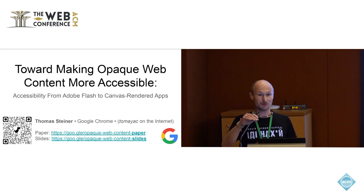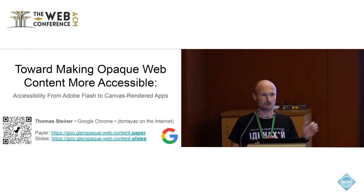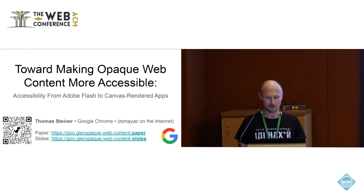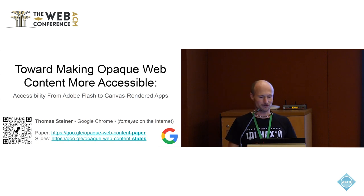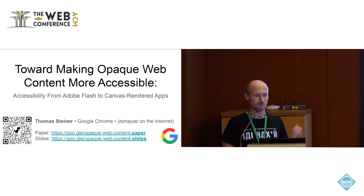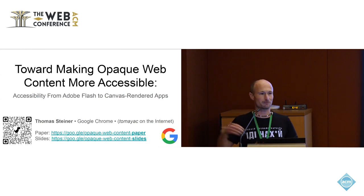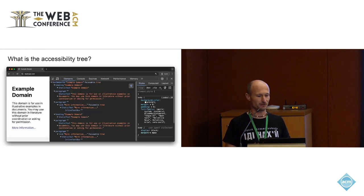My name is Thomas Steiner. You can find me as Tomajak on the internet, Mustard on Twitter — just search for Tomajak and you'll find your social network of choice. I'm from the Google Chrome team, and today I want to talk about making opaque web content more accessible, going all the way back to Adobe Flash up until today with Canvas-rendered applications.